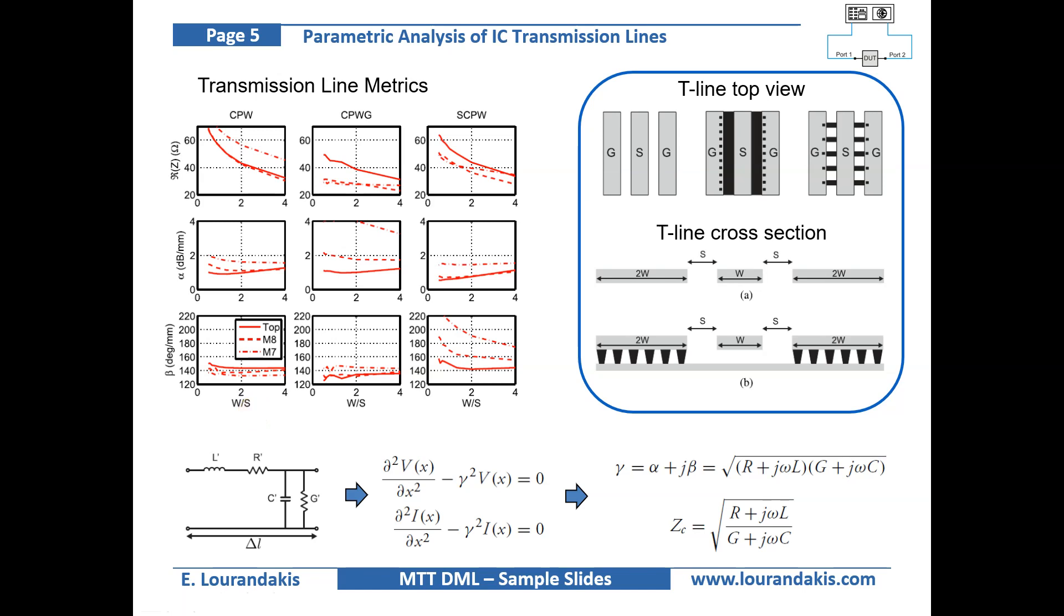It can be easily seen that the characteristic impedance changes with the W over spacing ratio and the used metal layer.